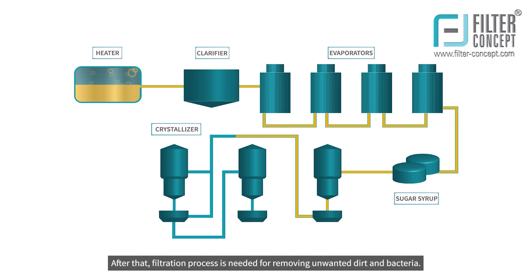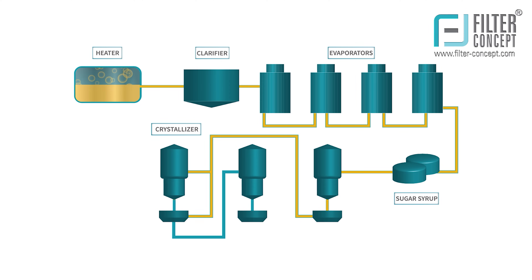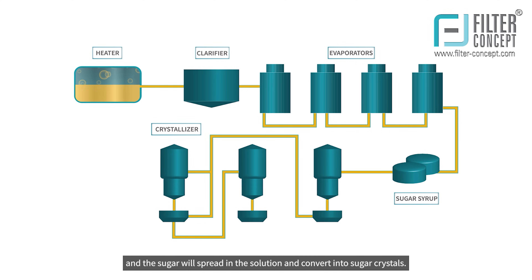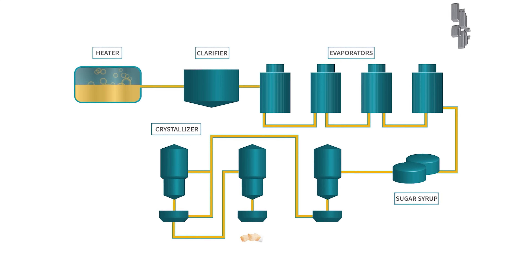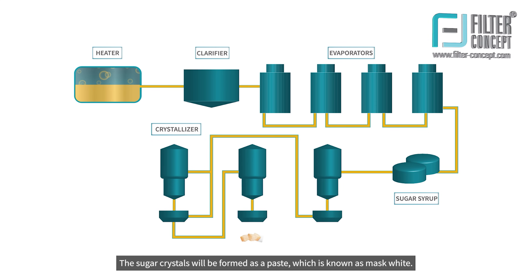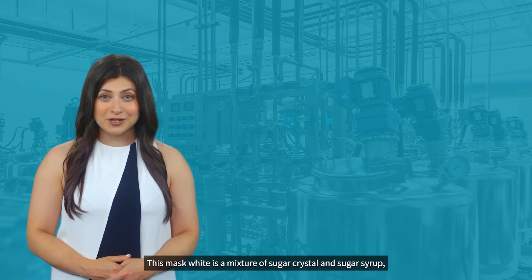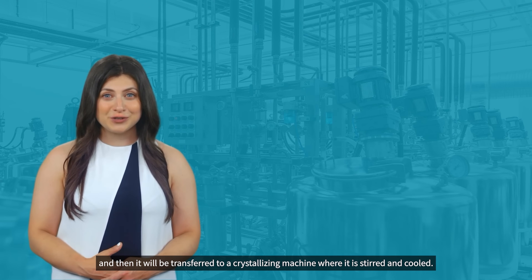After that, a filtration process is needed for removing unwanted dirt and bacteria. The syrup is then evaporated by adding sucrose, which is a suspended solution of alcohol and glycerin, and the sugar will spread in the solution and convert into sugar crystals. The sugar crystals form a paste known as massecuite, which is a mixture of sugar crystals and sugar syrup, and then it will be transferred to a crystallizer machine where it is stirred and cooled.